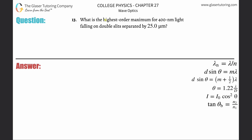Number 13: what is the highest order maximum for 400 nanometer light falling on double slits separated by 25 micrometers? Since we're dealing with a maximum, we're dealing with constructive interference, therefore we need the constructive formula for a double slit.